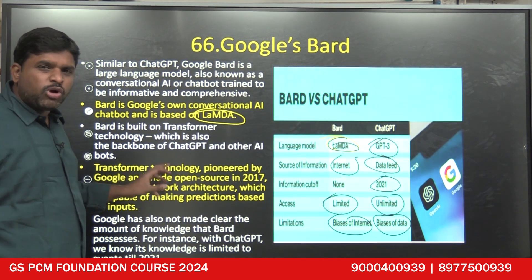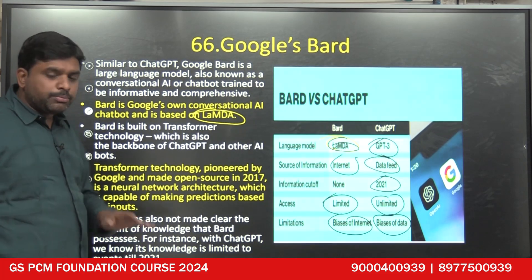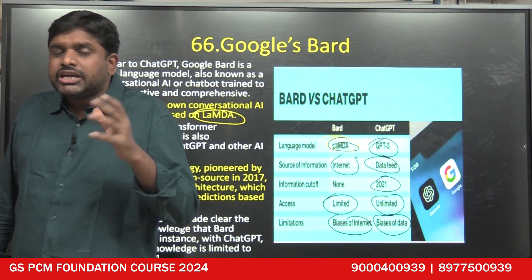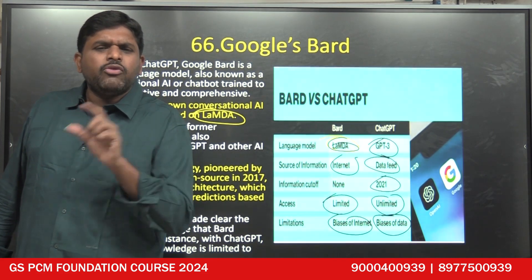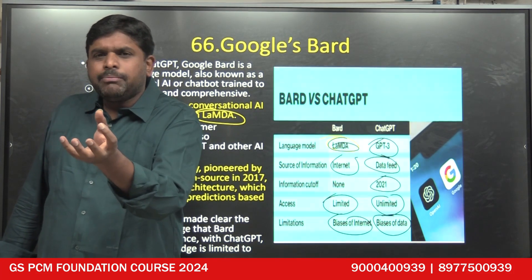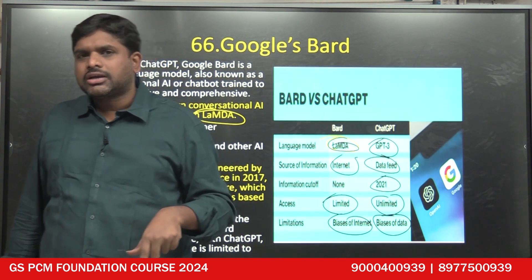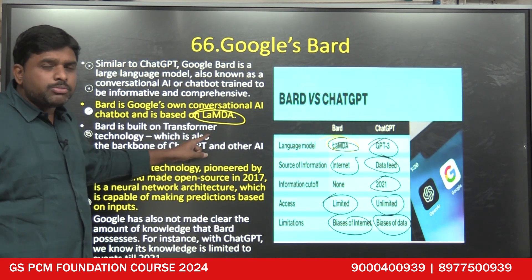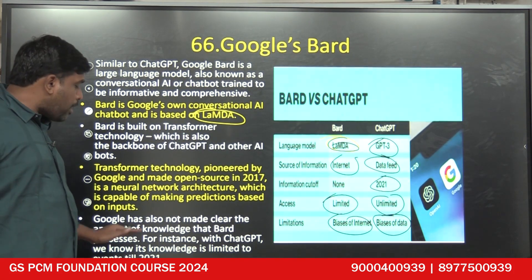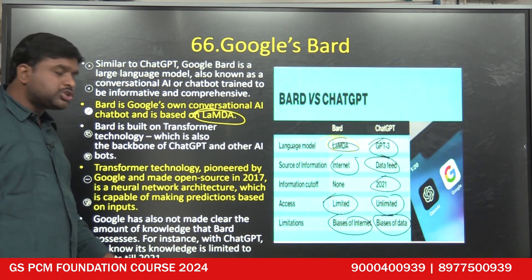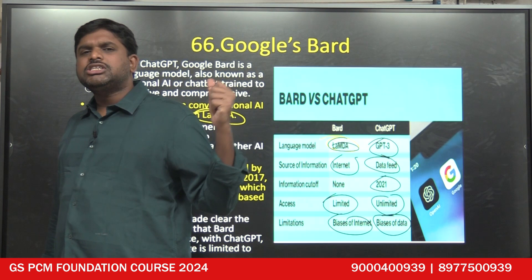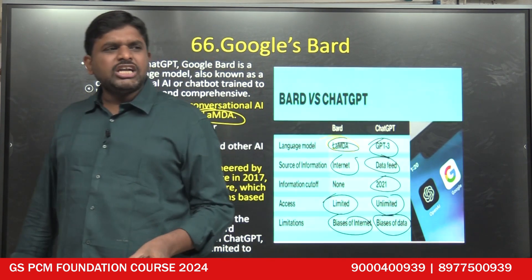Bard is mainly based on transformer technology — which is capable of making predictions based on inputs. For example, if I ask 'why did BJP lose Karnataka?', based on predictions using the frequency and context of words, it will give information. That is transformer technology. The language model used is LaMDA and the technology is transformer technology. Google has not made clear the total amount of knowledge Bard possesses. With ChatGPT, knowledge is limited to 2021, whereas Bard retrieves whatever is updated in Google today. So: Google Bard is internet-based; ChatGPT is data-based.